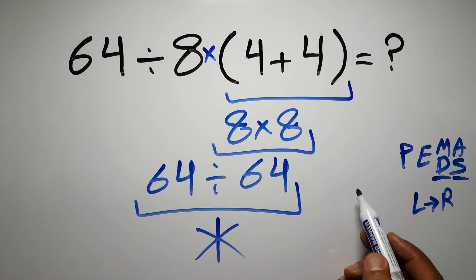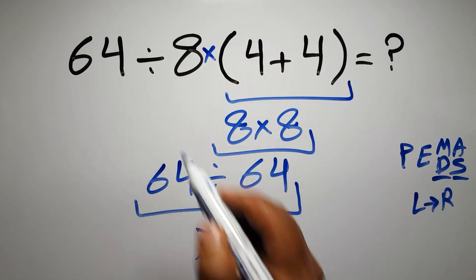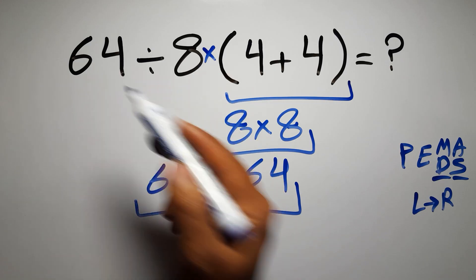According to the PEMDAS, first we have to do this parentheses, then this division, and finally this multiplication. If we do this multiplication before this division, it is wrong.